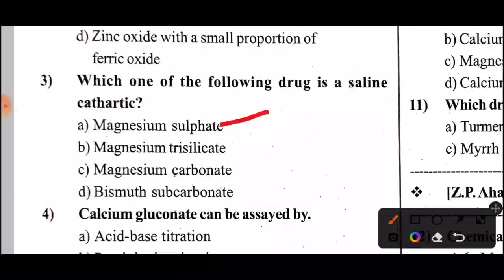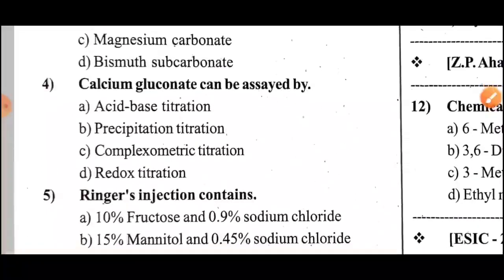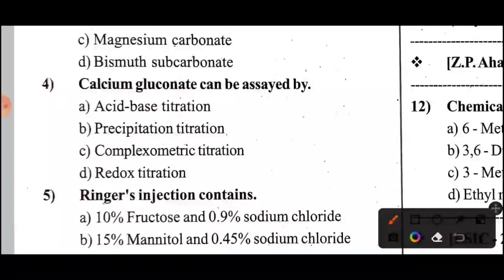Which one of the following drugs is a saline cathartic? Answer: Option A — Magnesium Sulfate. Question 4: Calcium gluconate can be assayed by — Option C — complexometric titration.